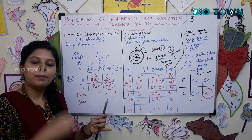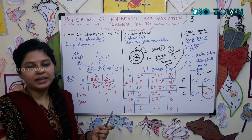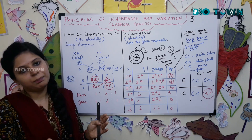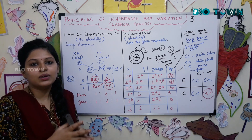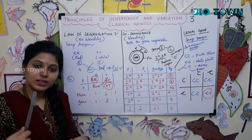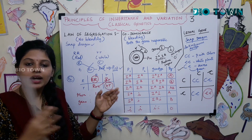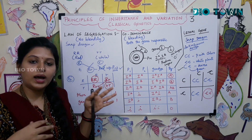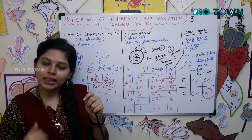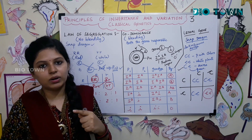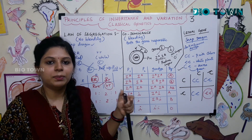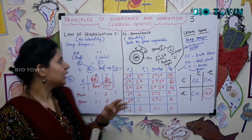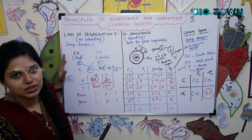When you mix white paint with red color paint, you get pink color paint. Similarly, when red color flowers fuse with white color flowers, everything in F1 becomes pink color flowers. When you do selfing with two pink color flowers, the combinations could be red, pink, or white. Unlike the monohybrid cross where phenotypic ratio was 3:1 and genotypic ratio was 1:2:1, here both the phenotypic and genotypic ratio are 1:2:1.